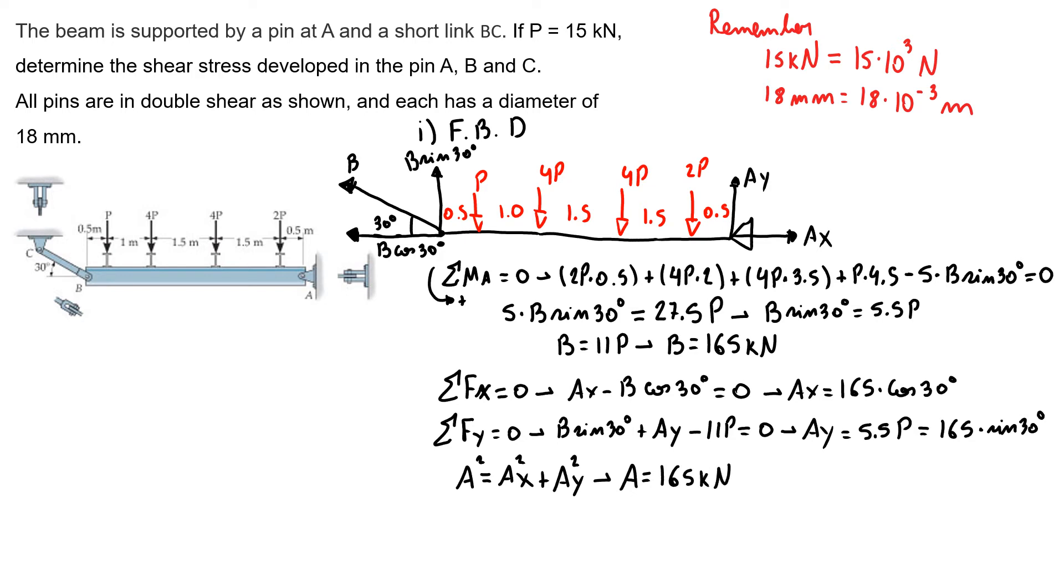In order to find my reaction in C, we can do our free body diagram of our link. So I have B pointing that way, my B force, and I have a C force pointing that way along my link. If I apply my sum of the forces equals zero, I have to find that C minus B equals zero, and then I find that my C equals 165 kilonewtons as well.